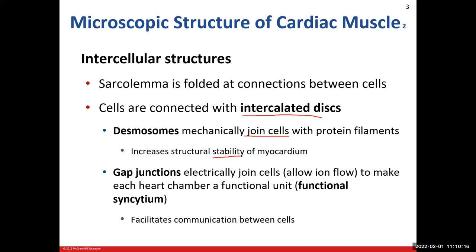Then the gap junctions, which are made up of proteins, essentially make a hole that allows one cell to communicate to the other by allowing ions to flow through those cells. Each chamber of the heart — the top two chambers are the atria, the bottom two are the ventricles — gap junctions allow each chamber to function as one unit. We call that functional syncytium. It optimizes the communication between these cells so all the cells are contracting at the appropriate time as a functional unit.